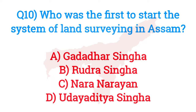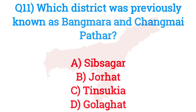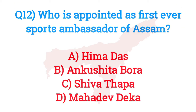Question number ten: Who was the first to start the system of land surveying in Assam? The answer is option A — Gadhadar Sinha. Question number eleven: Which district was previously known as Bangmara and Chungmaipathar? The answer is option C — Tinsukia.